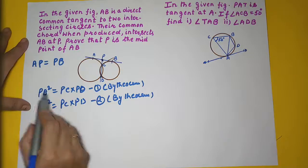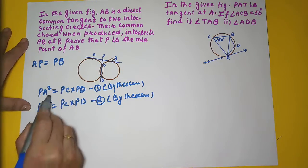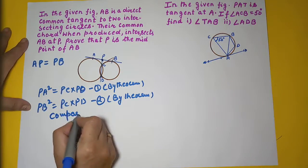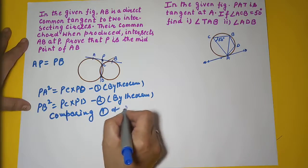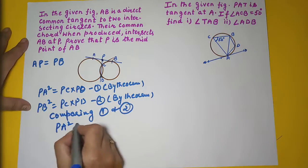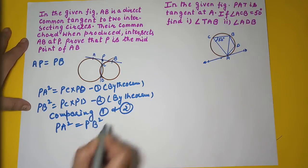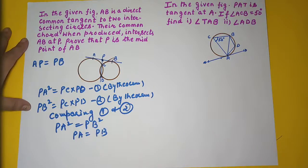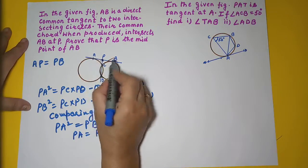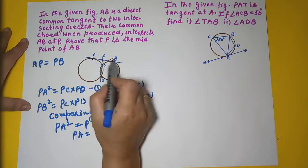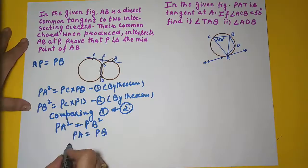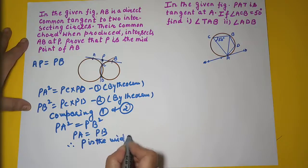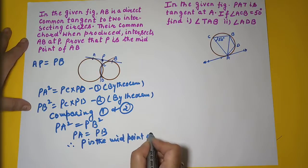Comparing equations one and two: PA² = PC × PD and PB² = PC × PD. So PA² = PB². Taking square roots on both sides gives PA = PB. PA equals PB only when P is the midpoint of AB. Therefore, P is the midpoint of AB.